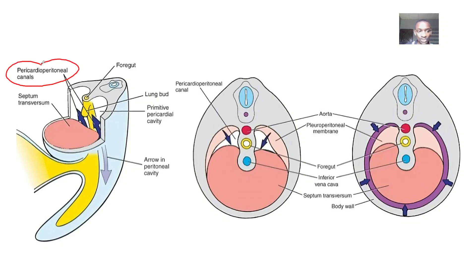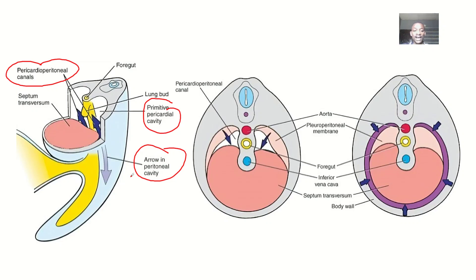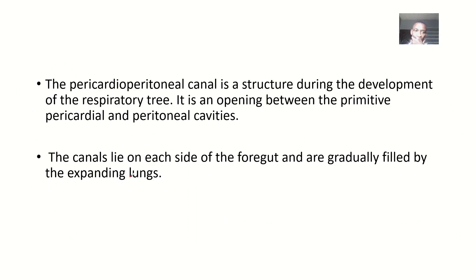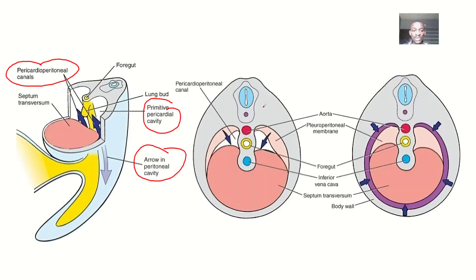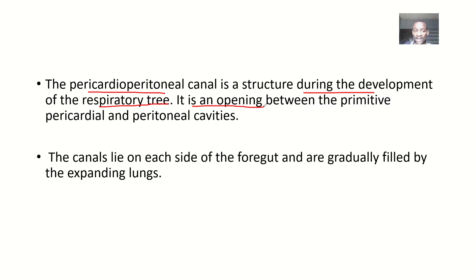You can see here this is the pericardio-peritoneal canal — it's a canal, it's an opening, and it still develops to form the pleural cavity. In the embryo, it is in between the pericardial cavity and the peritoneal cavity. So the space between the pericardial cavity and the peritoneal cavity is what we call the pericardio-peritoneal canal. It is an opening between the primitive pericardial cavity and the peritoneal cavities.